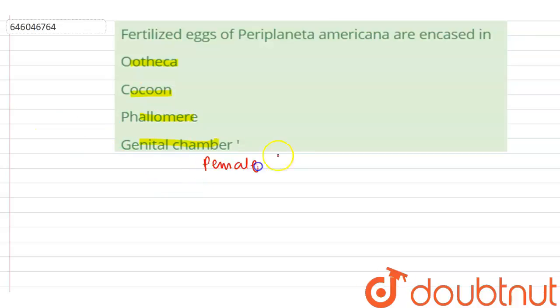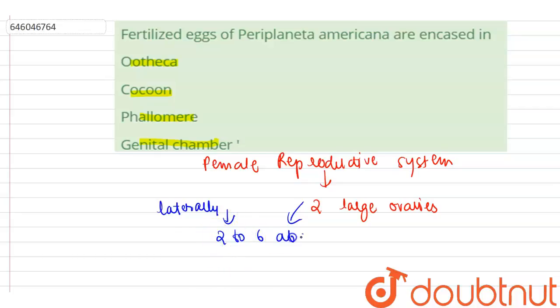The female reproductive system in Periplaneta americana, which is cockroach, has two large ovaries that are present laterally in the second to sixth abdominal segments.